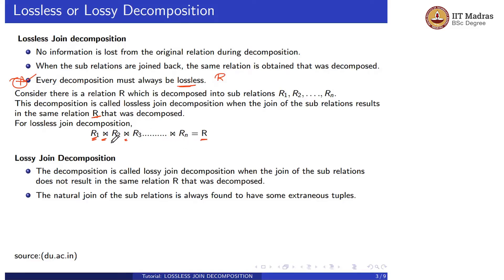If we perform the natural join operation between the decomposed relations and we get the same relation R, then we can say that our decomposition is lossless joint decomposition.